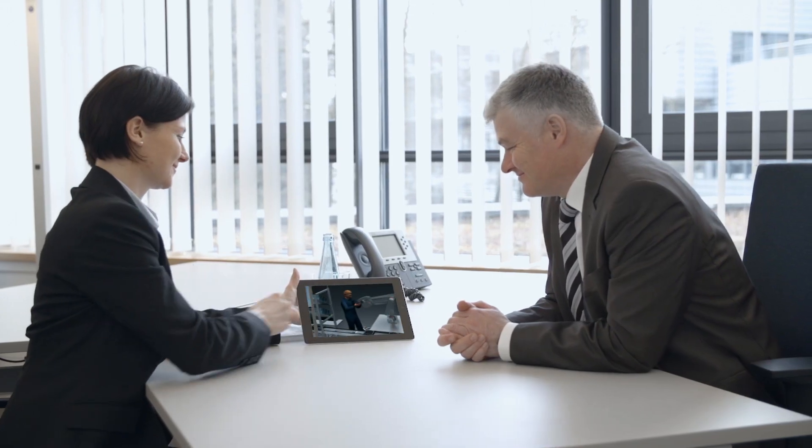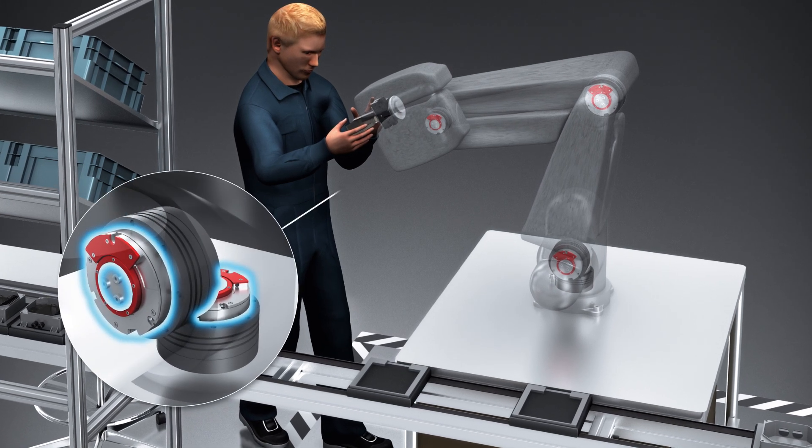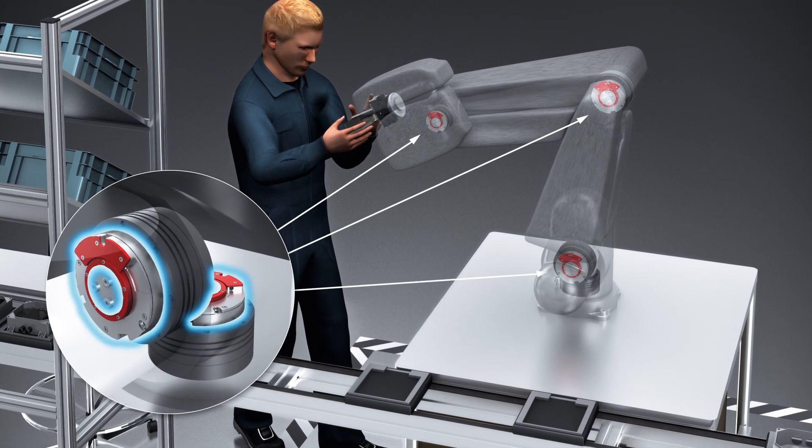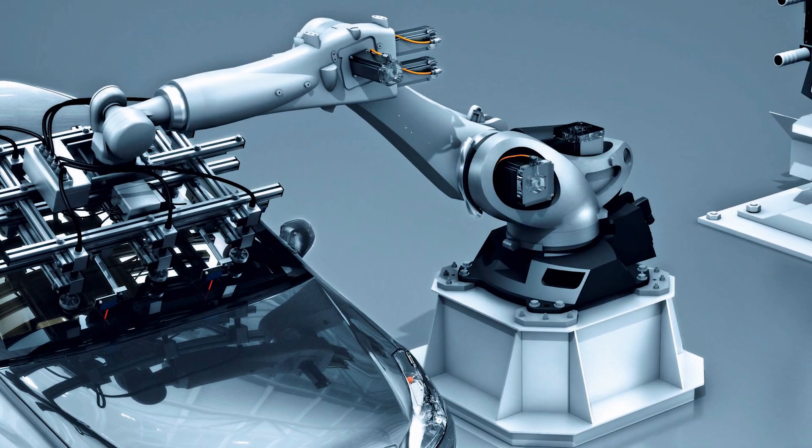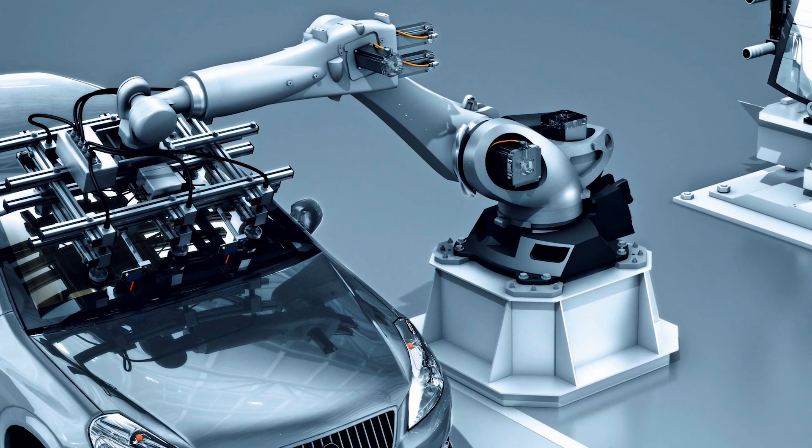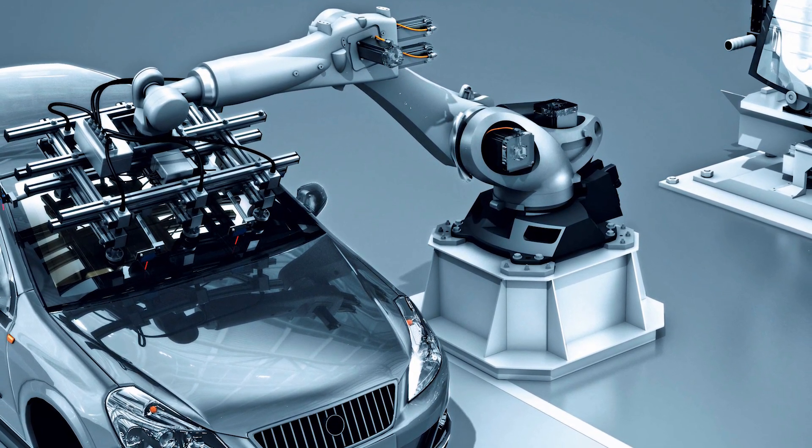Motor feedback systems from SICK monitor and secure robot motion sequences, ensuring precise and efficient processes. They detect the exact speed, path, or angle of a movement and deliver the result to the process control in the form of data that can be used for further calculations.